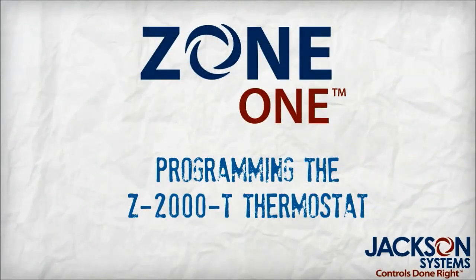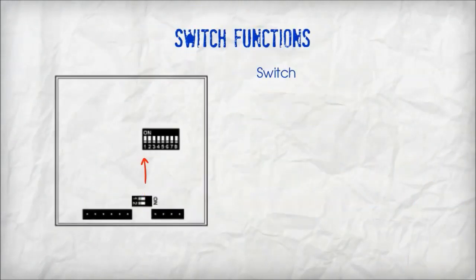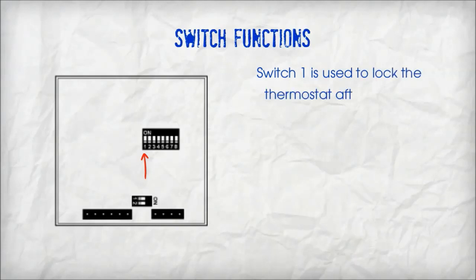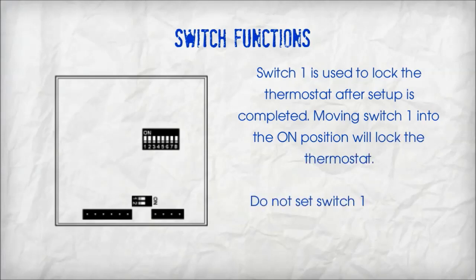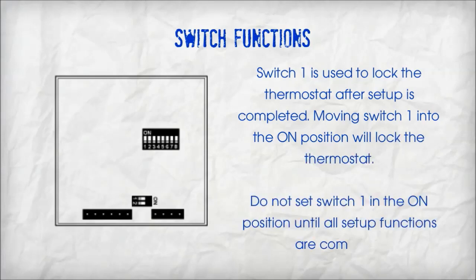Programming the Z2000D Thermostat. Switch 1 is used to lock the thermostat after setup is completed. Moving switch 1 into the on position will lock the thermostat. Do not set switch 1 in the on position until all setup functions are complete.